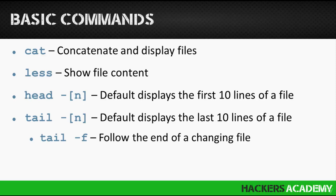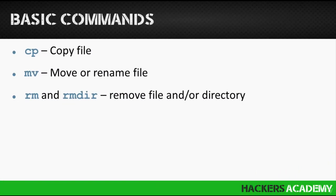For example, typing 'head file.txt' shows the first 10 lines. 'tail' shows the last n lines — by default 10. 'tail -f' follows the end of a changing file, so if the file is live and updating, you can monitor it in real time. The 'cp' command copies a file, 'mv' moves or renames a file, and 'rm' and 'rmdir' are for removing files and directories.